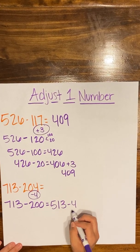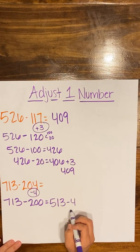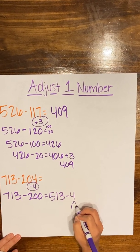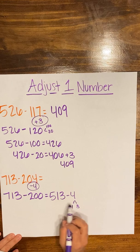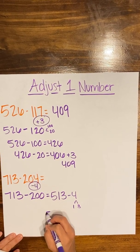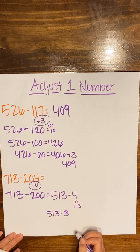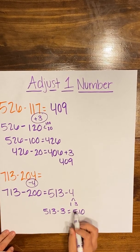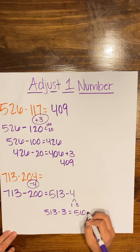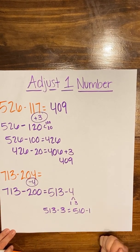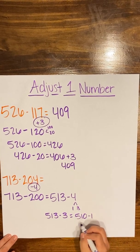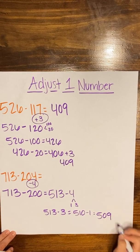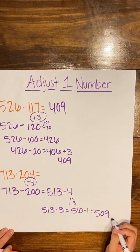Now I have 513, but remember I adjusted the number by subtracting 4, so I have to subtract 4 from the difference as well. So 513 minus 4: I run into regrouping because I have only three ones but need to take away four. So I decompose 4 into 1 and 3. First, 513 minus 3 gives me 510. Then subtracting 1 is like going one place back on a number line — the number right before 510 is 509. So the answer is 509.